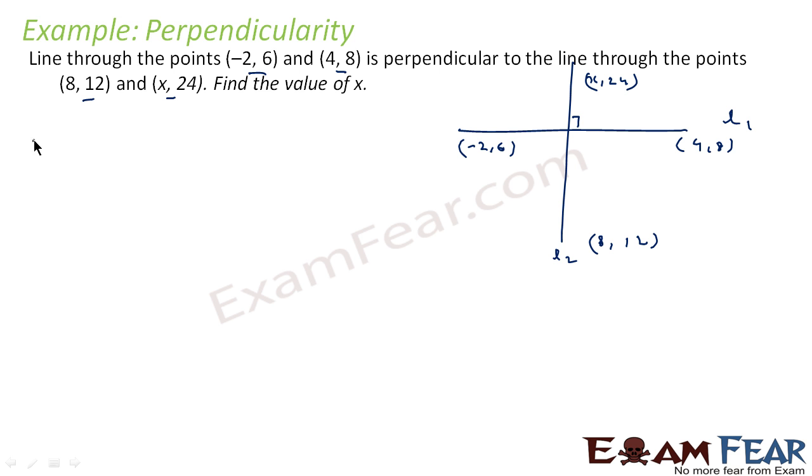Now, slope of line 1 is nothing but M1 and M1 is nothing but (y2 minus y1) by (x2 minus x1). So here this is y2, this is y1, this is x1, this is x2. So what we get is (8 minus 6) by (4 minus (-2)), that is 2 by 6, that is 1 by 3. This is slope of line 1.